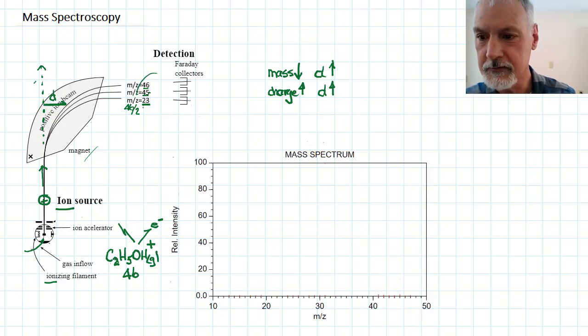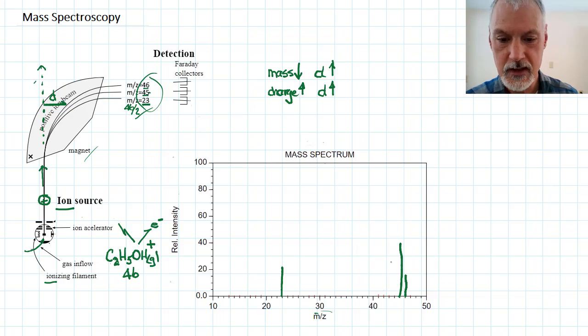The data is then collected from here and recorded in this graph that we see down here. So we would see peaks or lines indicating how often that fragment appears in a particular detector. Here I'm showing three lines for the three species I have shown here, and the most common species has the largest line.